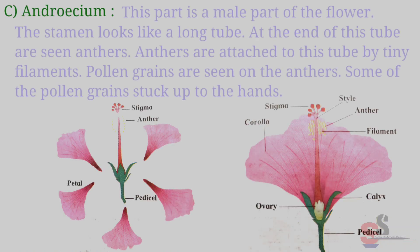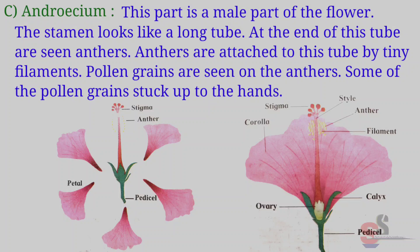Androecium — This part is the male part of the flower. The stamen looks like a long tube. At the end of this tube, anthers are seen. Anthers are attached to this tube by tiny filaments. Pollen grains are seen on the anthers.